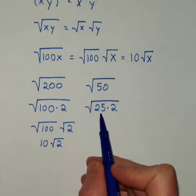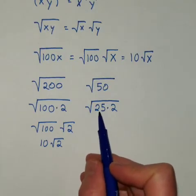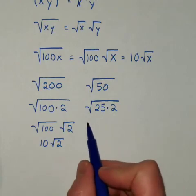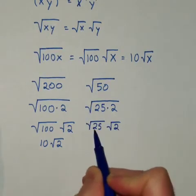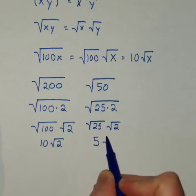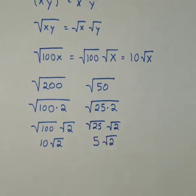But some of those other combinations are not going to work because you have to have a perfect square, something from the list we looked at in the last section. A perfect square factor in order for this to work out. So we do the square root of 25, square root of 2. This becomes 5 times the square root of 2.